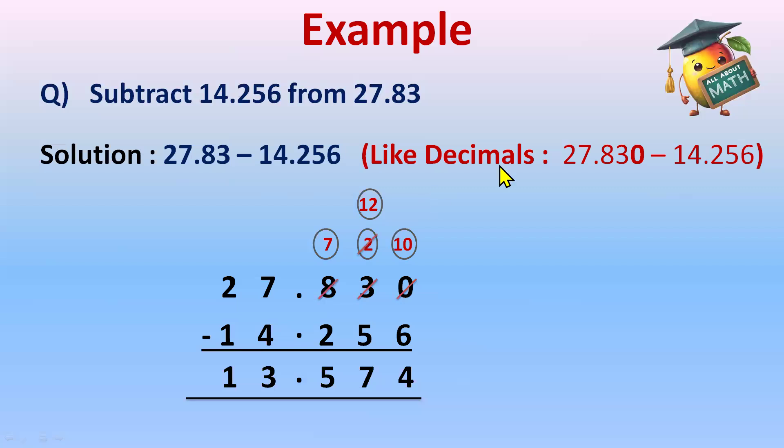It's very easy. Just remember, convert the given decimal numbers into like decimals, do the subtraction, and subtraction you will start from the very right side, that is from the thousandths place, whatever the place we have on the right side.